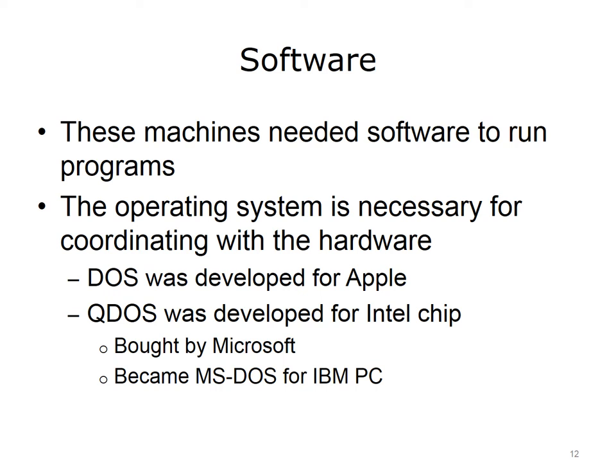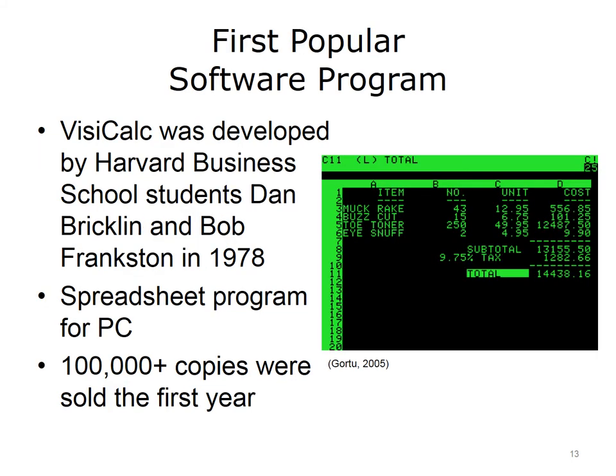The smart, quick maneuvering by Bill Gates and Paul Allen helped launch the success of Microsoft with the initial IBM PC. The first popular software program was VisiCalc. It was developed by Harvard Business School students Dan Bricklin and Bob Frankston in 1978, and it was a spreadsheet program for the PC. Many businesses were very interested in spreadsheets for their many calculations. Over 100,000 copies were sold the first year. Other spreadsheet programs soon followed — Lotus 123 in 1982 and Excel in 1985.